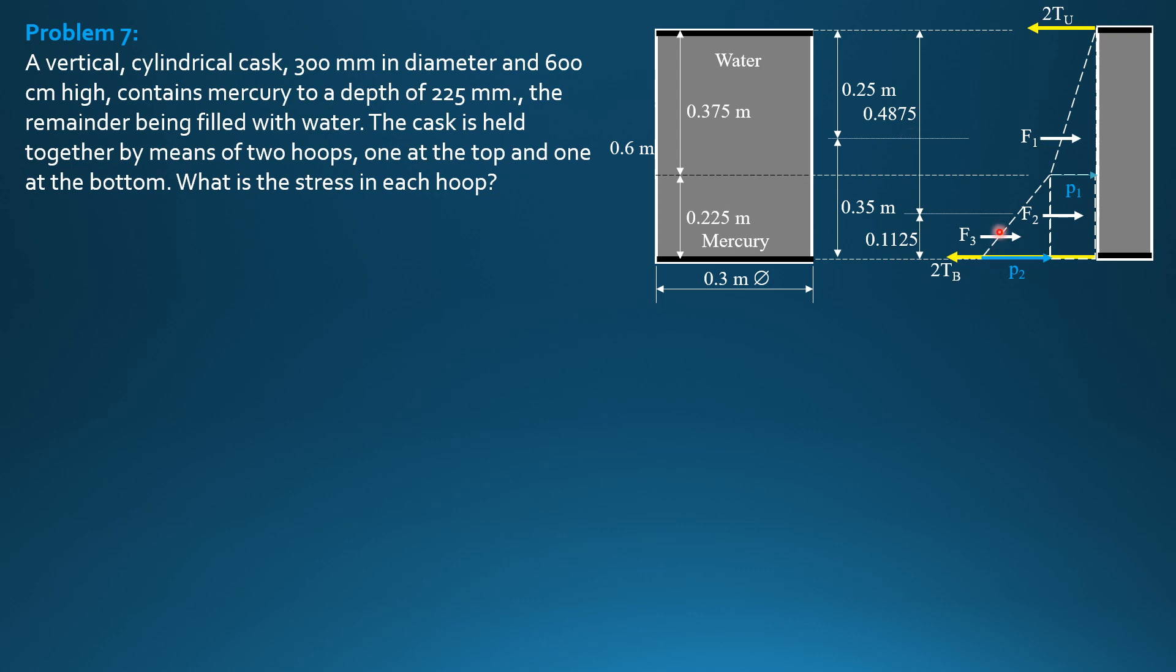F3 is one-third of 0.225 from the bottom, 0.075. So its distance from the top is 0.6 minus 0.075, 0.525.